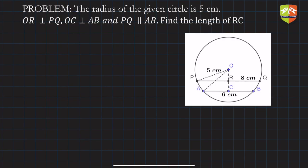In this problem, it's given that the radius of the circle is 5 centimeters. You can see in the diagram, OR is perpendicular to PQ (PQ is a chord), OC is perpendicular to AB (AB is another chord), and PQ is parallel to AB. So two chords PQ and AB are parallel to each other.